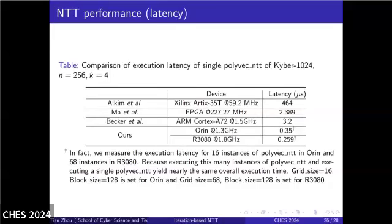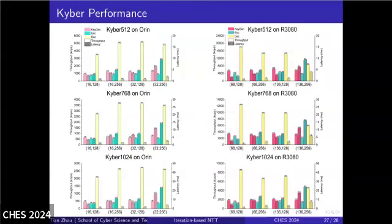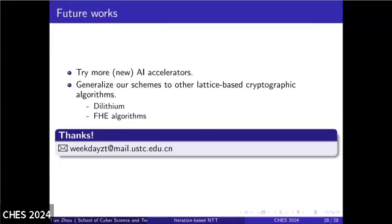Regarding latency for the NTT of a polynomial vector, compared to the traditional approach of sequential computing four times, the GPU can handle these tasks in parallel. Thanks to the high frequency and performance of tensor cores, the amortized latency is also significantly reduced. We implemented all parts of Kyber across its different parameter sizes. Our results show that the GPU-based implementation has the advantage of throughput but the shortcoming of latency. As the workload increases, the latency observably rises, while the throughput peaks at a moderate workload level. Looking ahead, we plan to explore more AI accelerators and extend our method to other lattice-based cryptographic algorithms, such as Dilithium and FHE. Thank you all for listening.